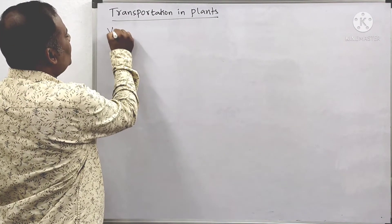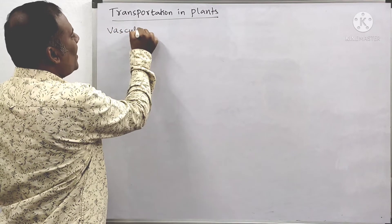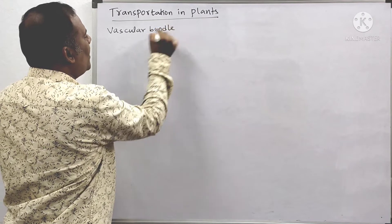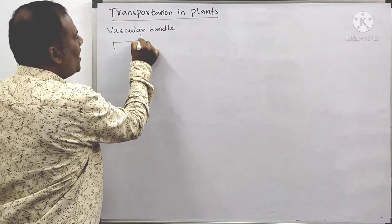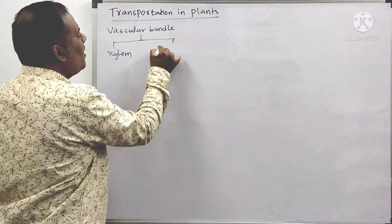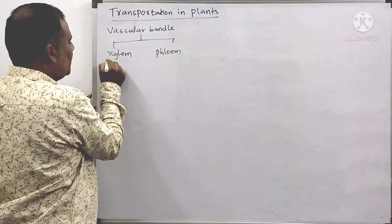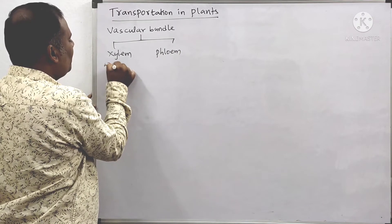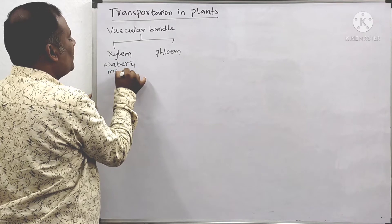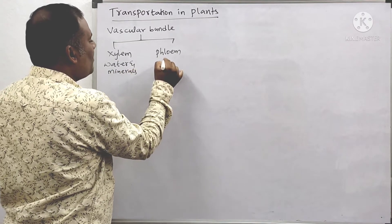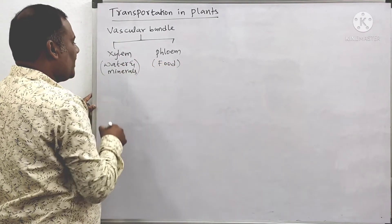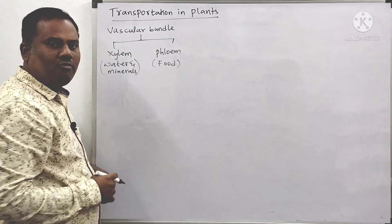In your earlier classes, you know that there is vascular tissue consisting of what is called a vascular bundle. There are two: xylem as well as phloem. You know that xylem is useful for transport of water and minerals, whereas phloem is useful in the transporting of food materials.